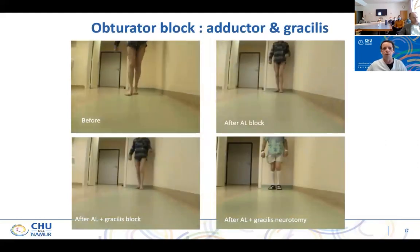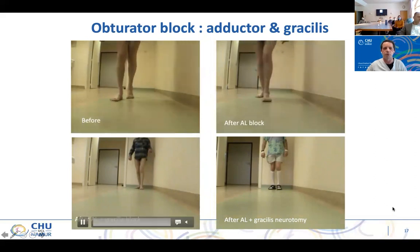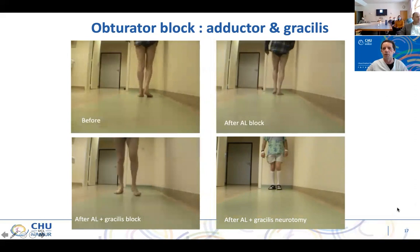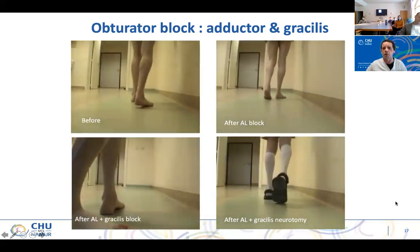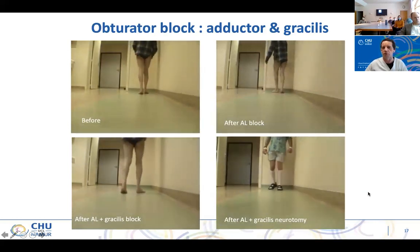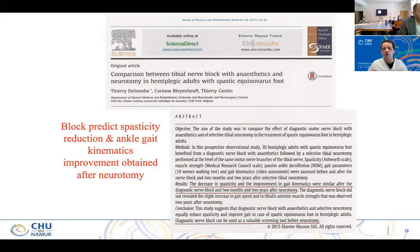The same at the level of the obturator nerve. It's a Strümpell-Lorrain disease — a spinal cord patient with an adducted hip. First I perform an adductor longus nerve block bilaterally. It improves. Followed by a gracilis nerve block — we are able to do it selectively. Then we did perform a neurotomy, and that's the day after surgery before the patient came back home. The result is quite the same as after the nerve block. What is very interesting with the blocks is that it predicts the spasticity reduction and ankle-gait kinematic improvement obtained after neurotomy.